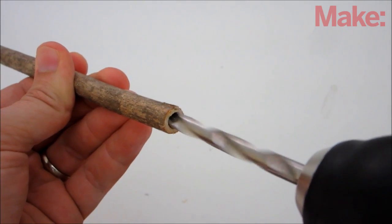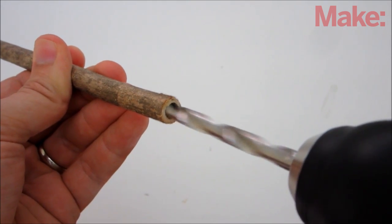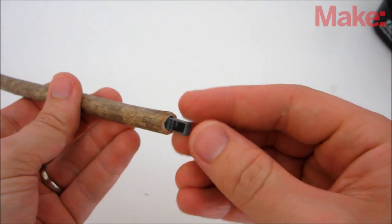To mount an RFID chip in a stick, just drill a hole in one end that's the same size as the chip, and then slide it in place.